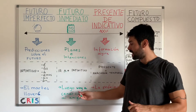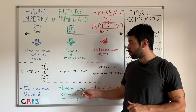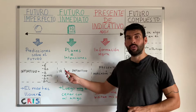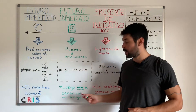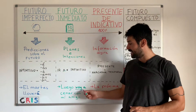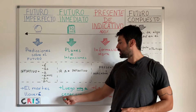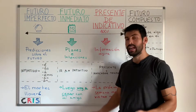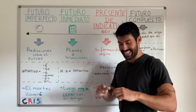En este caso tenemos «voy», que es la conjugación del verbo IR en primera persona singular del yo. Utilizamos la preposición A y el infinitivo cenar. Easy peasy mate.